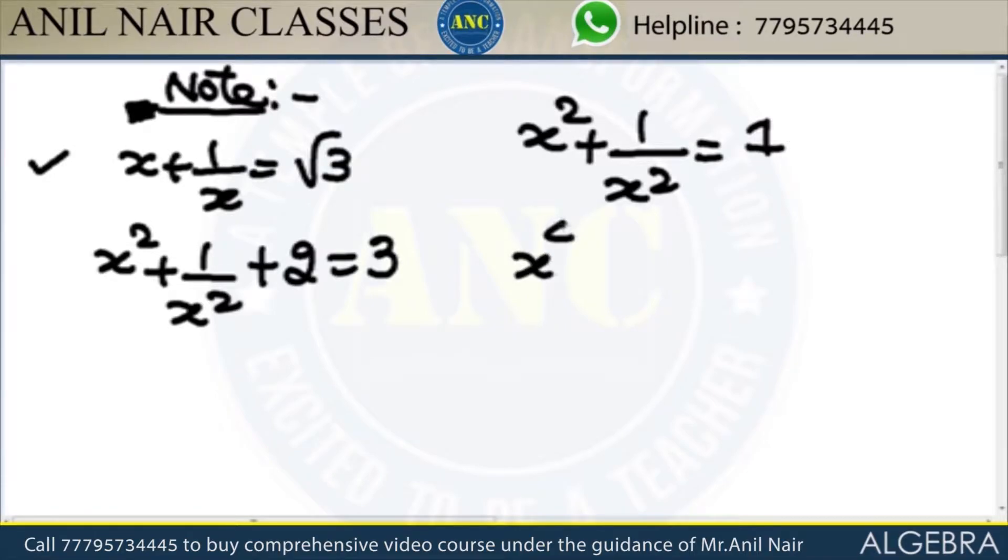This is nothing but x power 4 plus 1 is x square. So x power 4 minus x square plus 1 is 0.